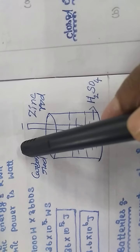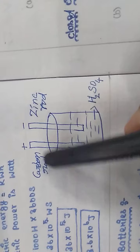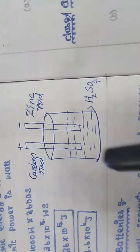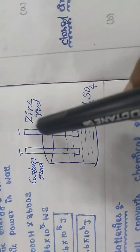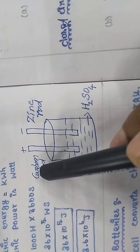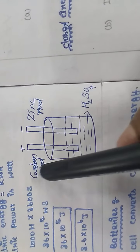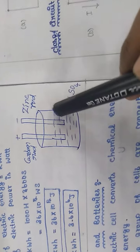The carbon rod has positive potential and the zinc rod has negative potential. The two rods react with H₂SO₄. There are more electrons deposited at the zinc rod. The current flows in the opposite direction to electron flow in the zinc rod. This is a simple electric cell.